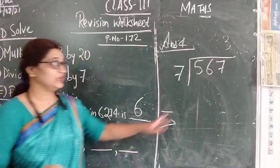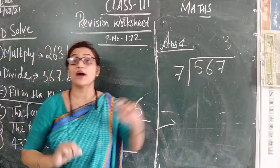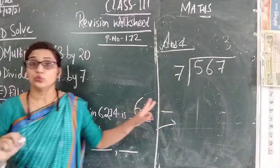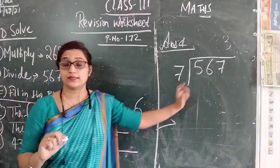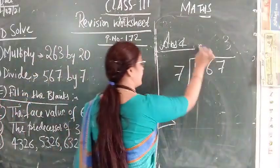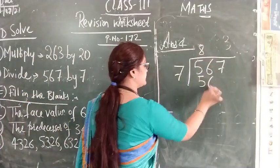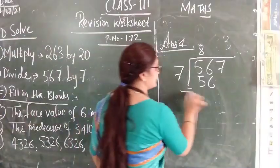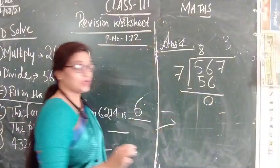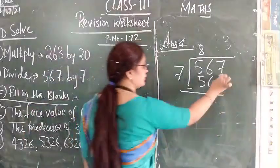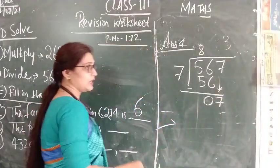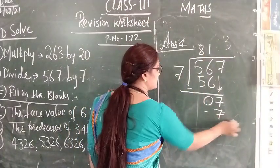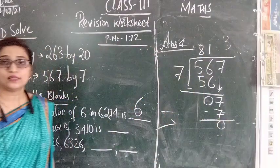Just take 1 digit that is 5. This 5 is less than 7, so here we are taking 2 digits, that is 56. 7 eights are 56. 56 minus 56 is 0. Here 1 digit is there, 7. Now 7 ones are 7.